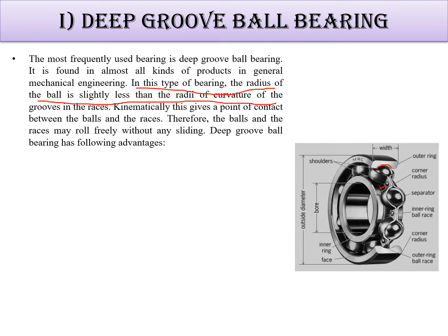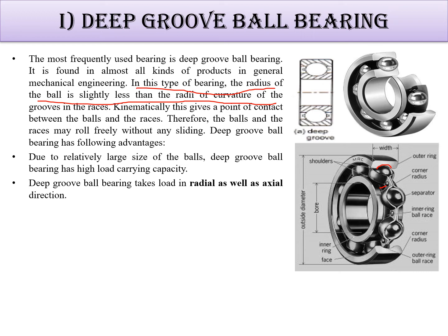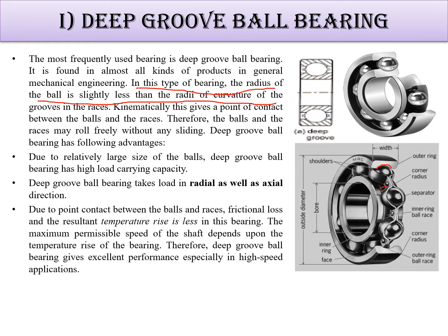Deep groove ball bearings can move freely without any sliding. Due to the relative size of the ball, deep groove ball bearing has high load carrying capacity and can bear both radial load and axial load. Temperature rise is less in these bearings, so shaft speed can be high. This type of bearing is used for both low speed and high speed shafts.